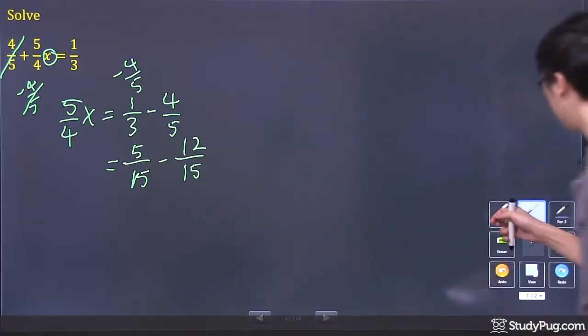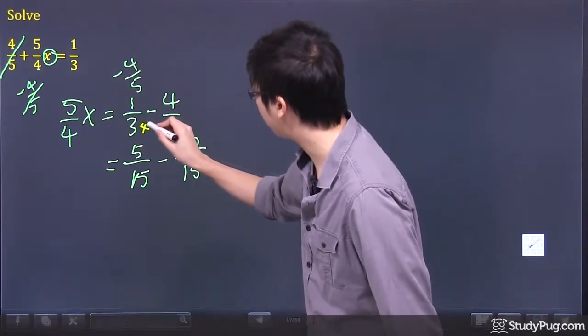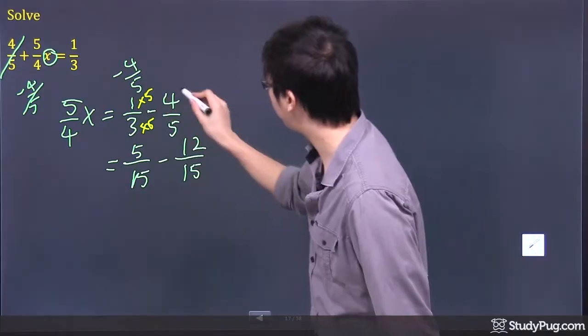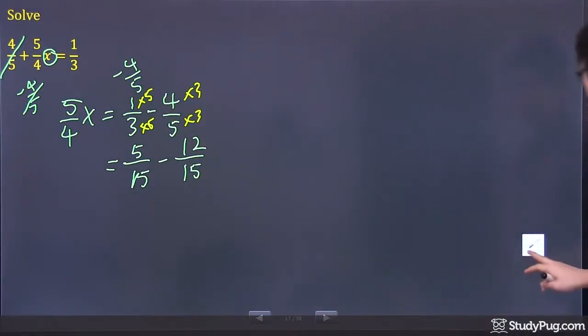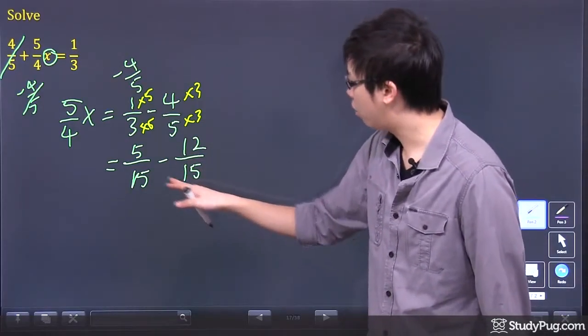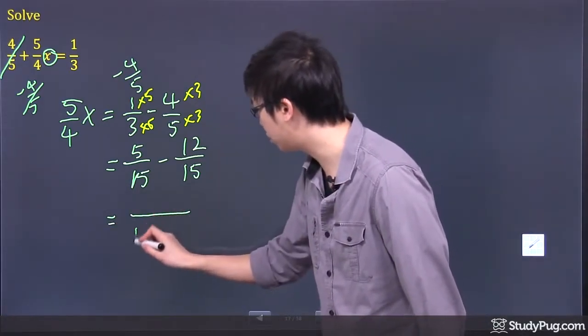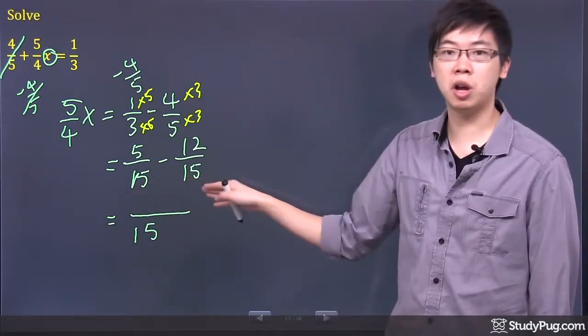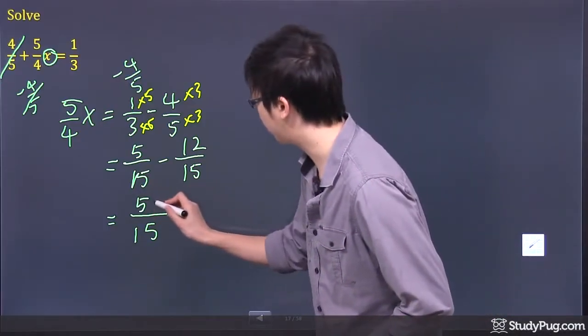So just let me write down the work in a different card so you will see what happened there. So what happened here is we times this by 5, we times that by 5, we times that by 3, and we times that by 3. So right now, we got 5 minus 12, they're all over 15. So if you want, I would recommend that you actually do it this way. Change the common denominator into one denominator.